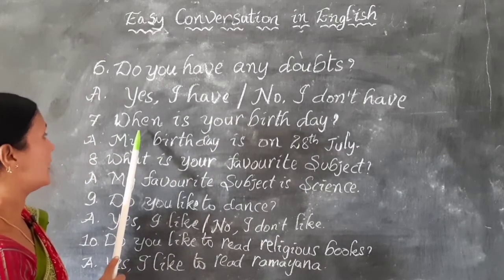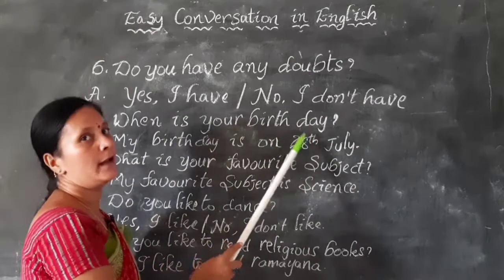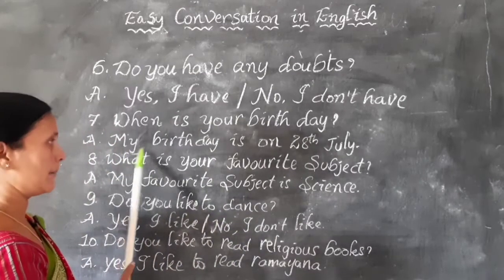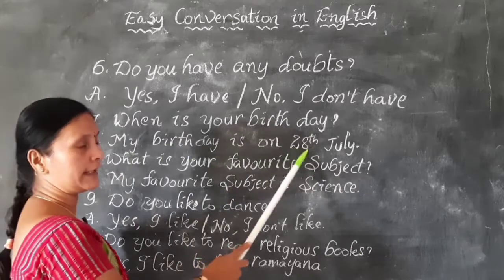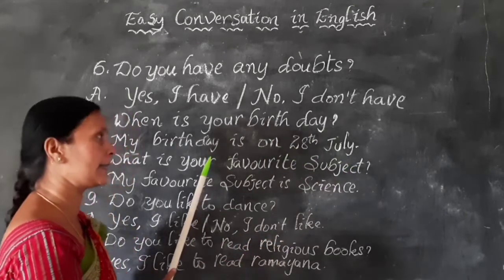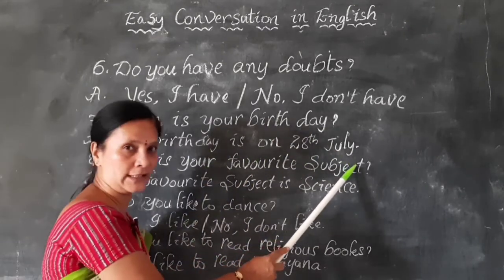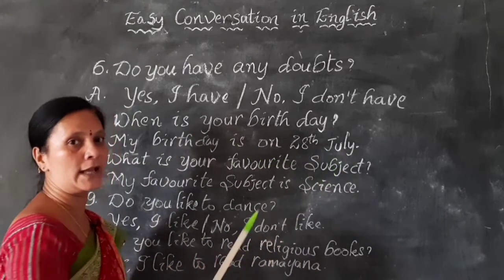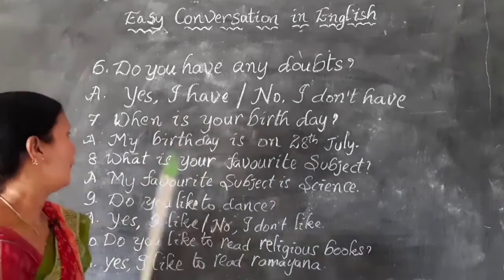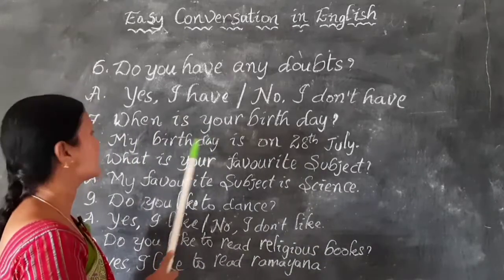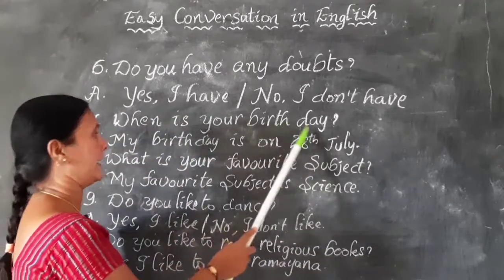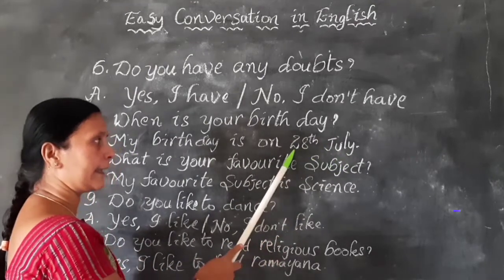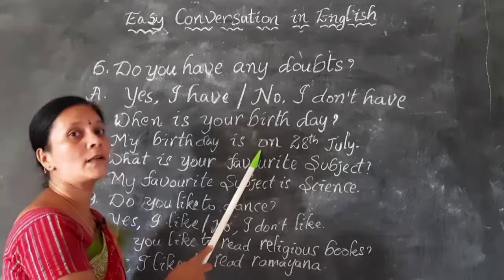The second one: When is your birthday? When anyone asks you, you answer: My birthday is on 28th July — mentioning your own date. Remember, before mentioning the date, use the word 'on': My birthday is on 28th July.